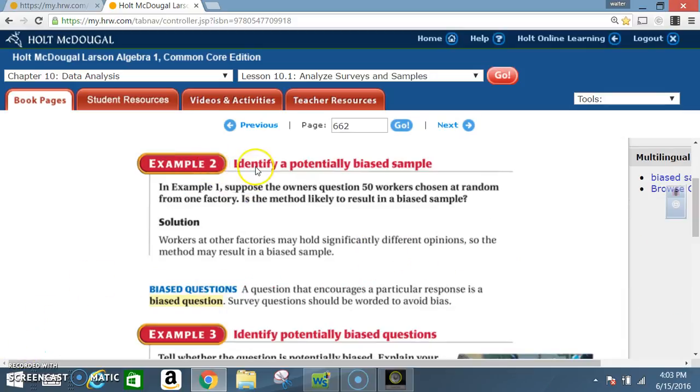Example 2: Identify a potentially biased sample. In example 1, suppose the owners question 15 workers chosen at random from one factory. Is the method likely to result in a biased sample? Solution: Workers at other factories may hold significantly different opinions, so the method may result in a biased sample.